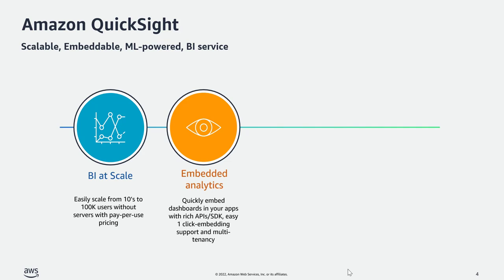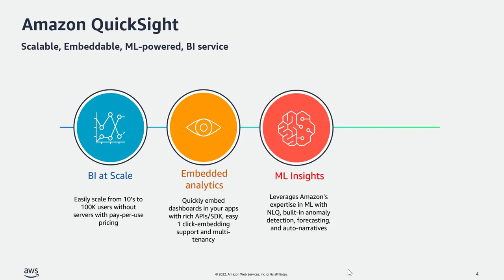You can embed analytics using Amazon QuickSight with rich APIs and SDK, and also easy one-click embedding support, while still providing multi-tenancy to your end users. Amazon QuickSight comes with ML Insights natively — some of these include natural language querying, where your end users can ask for insights in their natural language, as well as anomaly detection, forecasting, and auto-narratives out of the box.